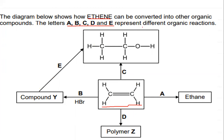We have been told that ethene can be converted into other organic compounds. The molecule right in the middle is definitely ethene, undergoing different types of reactions to give different organic molecules. The letters A through E are bolded to show emphasis — they represent different organic reactions. You must be able to work out how ethene moves to ethane, or from ethene to compound Y, as per this diagram.